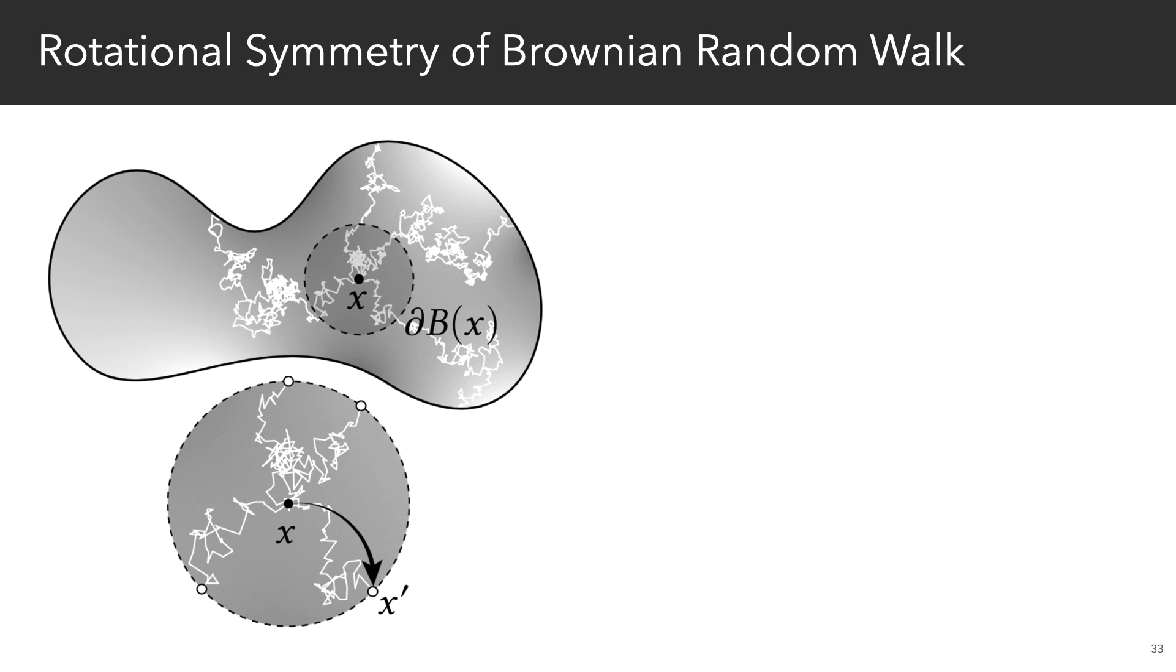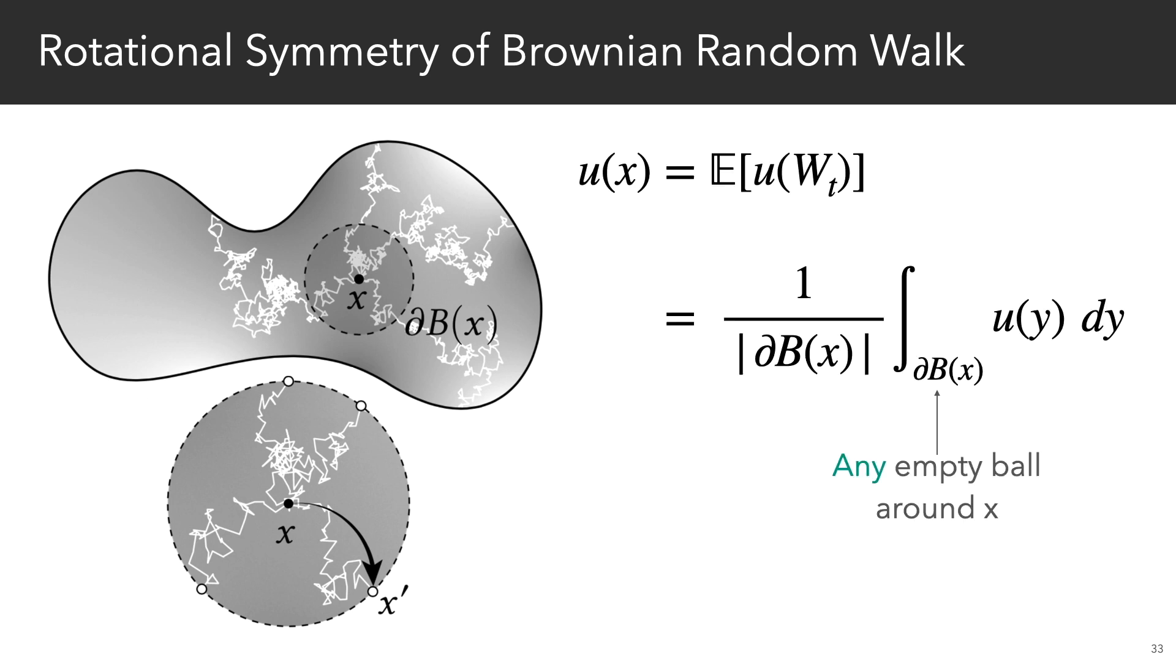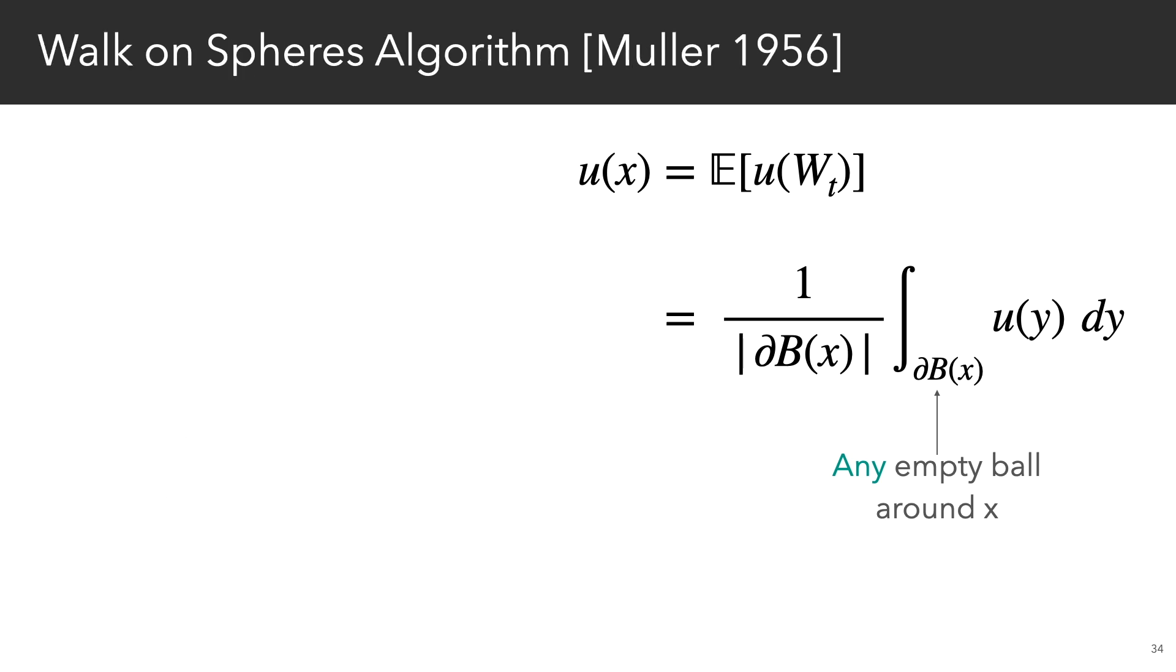And as a result, the expected value from the previous slide, but now inside the ball, can be written as the integral we had before. And in fact, this motivates an algorithm called walk on spheres, which was developed by Muller in the 1950s, but for some reason hasn't been picked up much for applications.